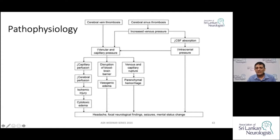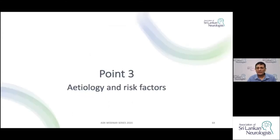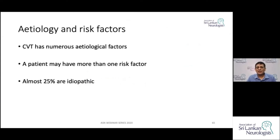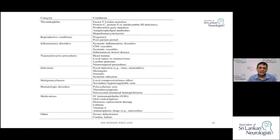In summary, there are two main effects: the effects of increased venous and capillary pressure, and the effects of increased intracranial pressure. Moving to point three — etiology and risk factors — CVT has many etiological factors and very often a single patient may have more than one risk factor. After thorough investigation, about 25% of patients still have no identifiable cause and remain idiopathic.